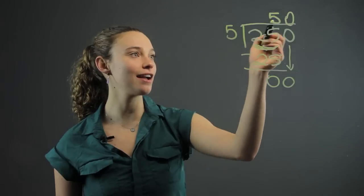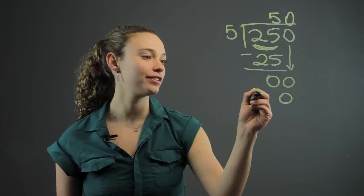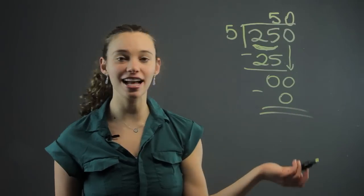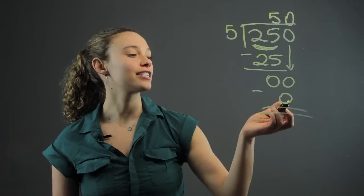Again, you multiply. You say 5 times 0 is 0. So 0 minus 0 is 0. And that's the end of the problem. There's nothing remaining.